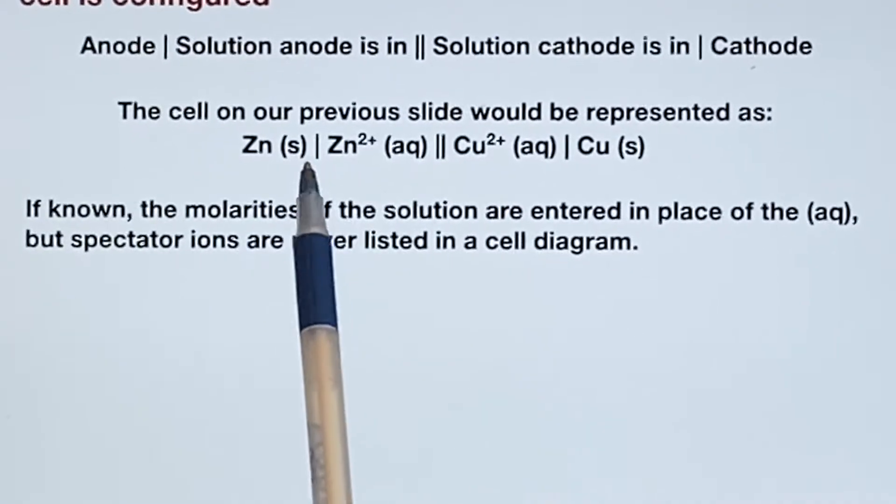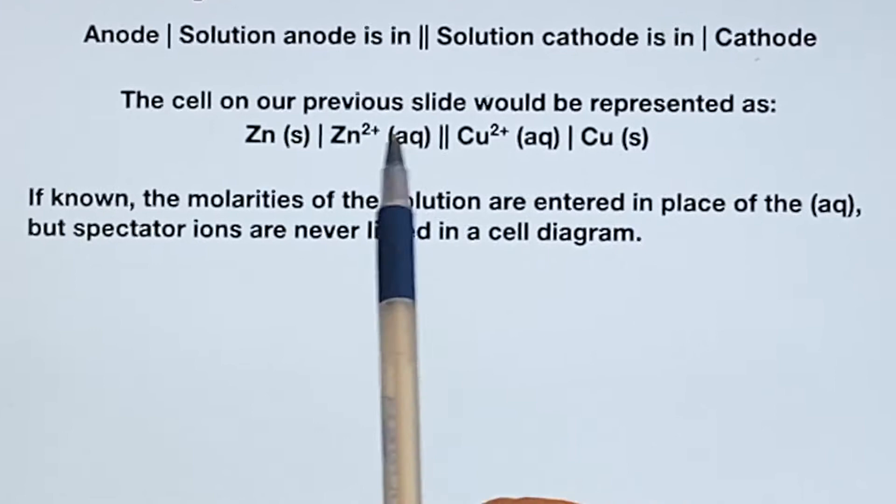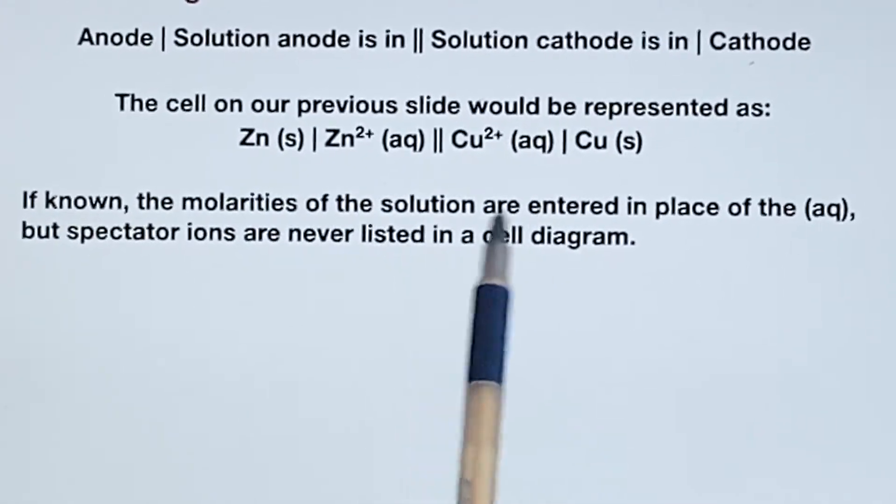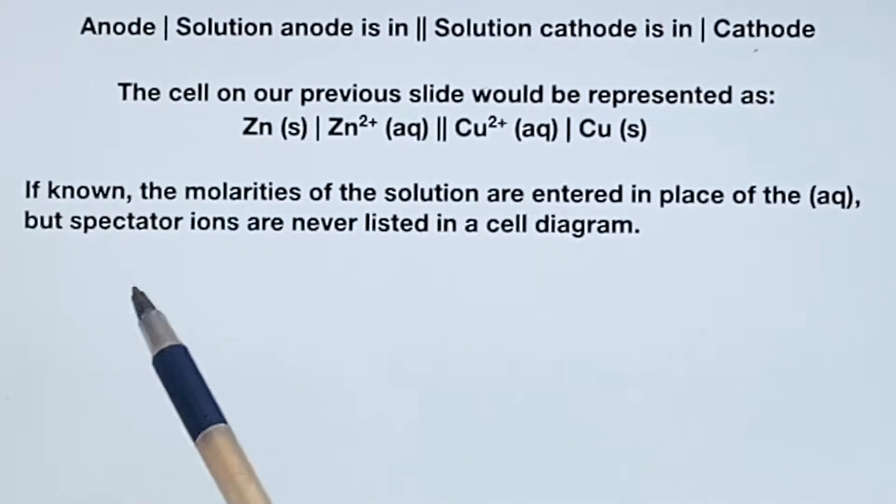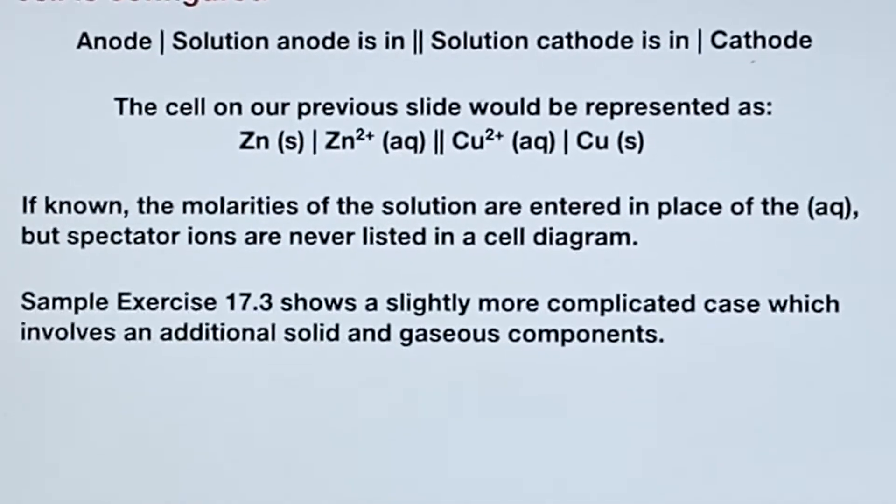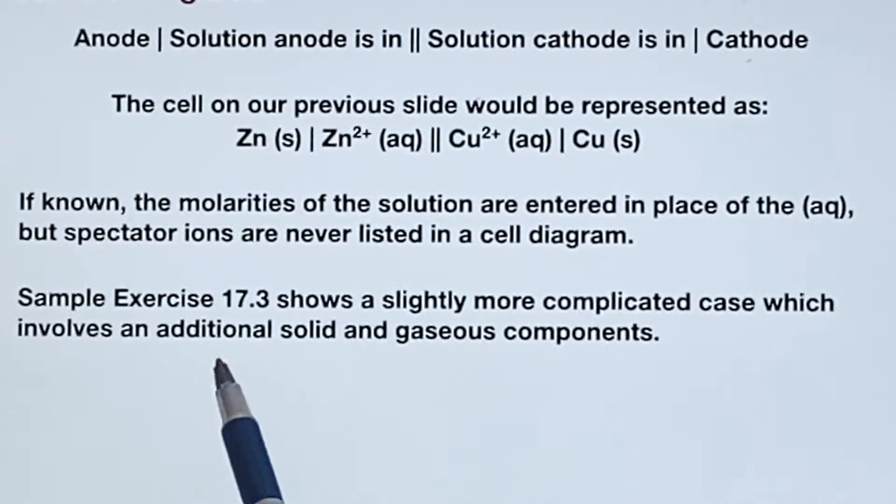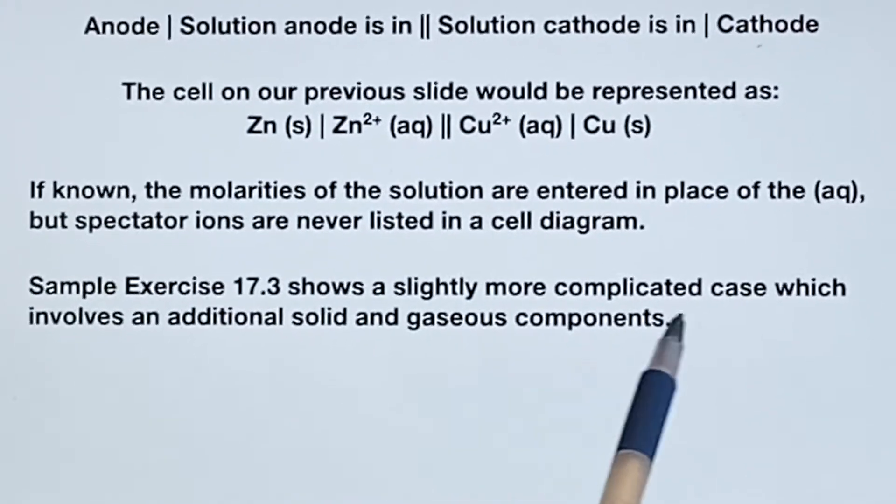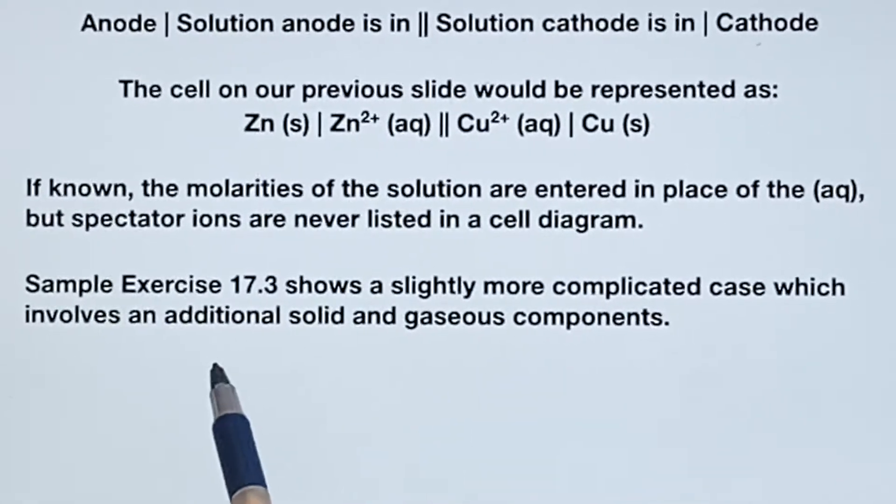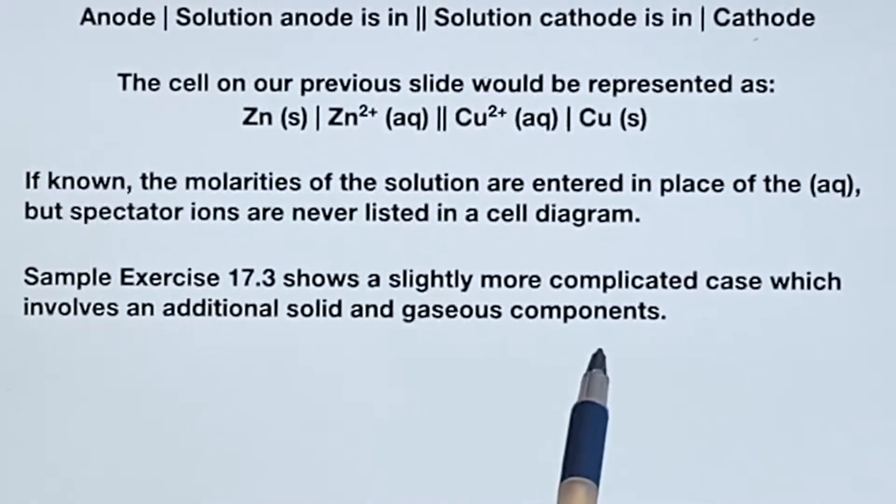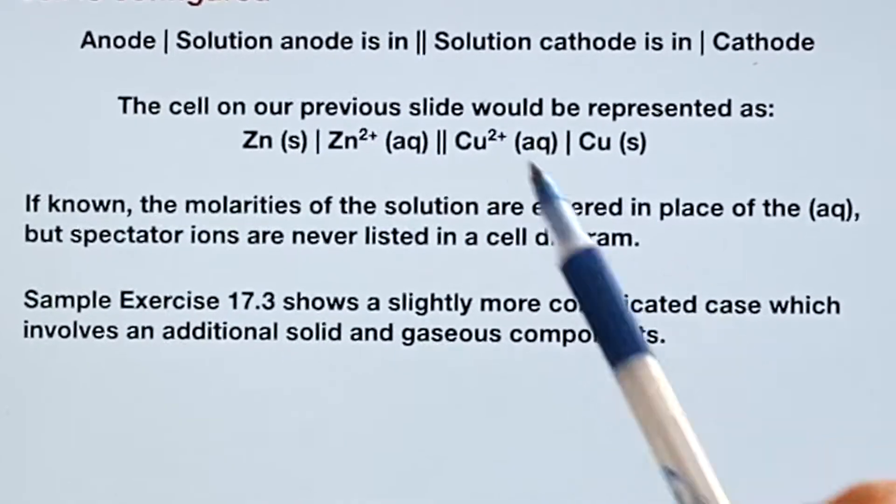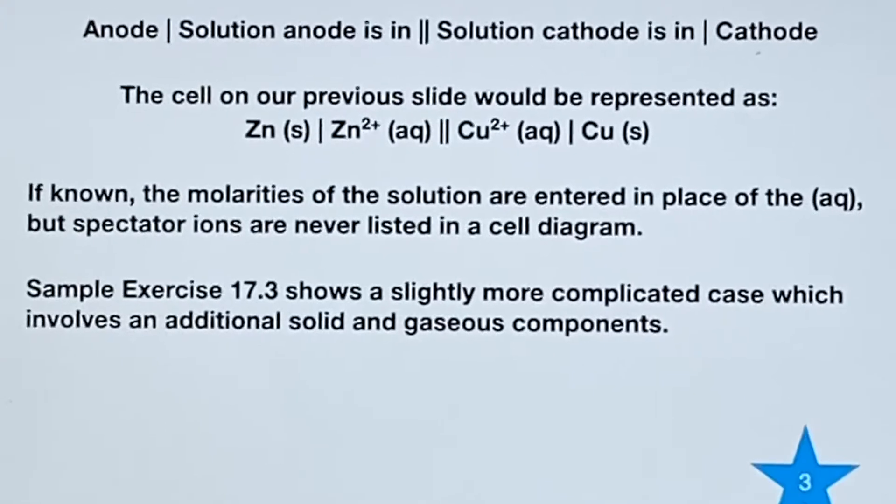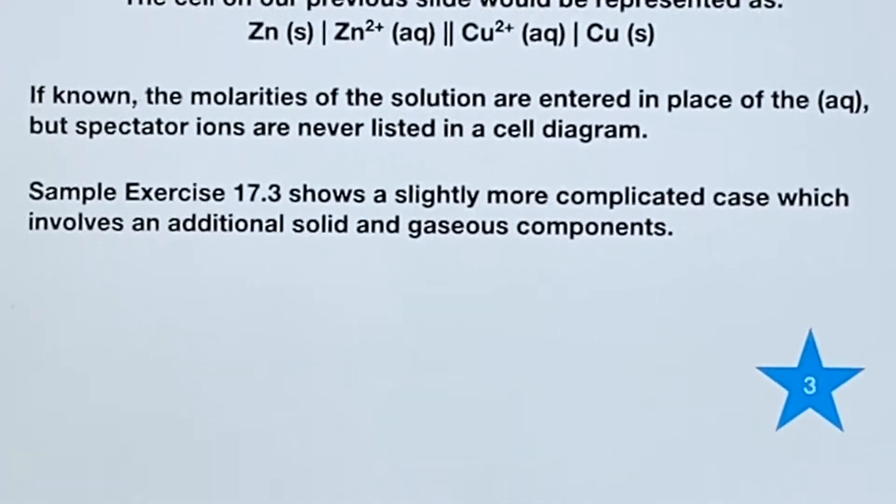If you happen to know the molarity of the solution, you can put it here in place of the AQ, because once you say that there's a molarity, of course it must be aqueous. But we don't list the spectator ions. You should go look at sample exercise 17.3 and go through it, because it is more complicated. There's an additional solid, and there are components that are gases, which we don't have in this one, but which sometimes exist. And now we're going to do one.